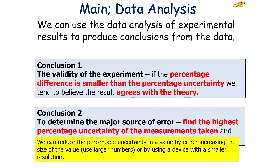To determine the major source of error, you look for your measurement with the highest percentage uncertainty and then look at ways to reduce it. You can reduce percentage uncertainty in a value by either increasing the size of the measurements taken — i.e., use larger numbers — or by using a device with a better resolution. It's more common in investigations to use larger values as it's easier than finding a device with a higher resolution.